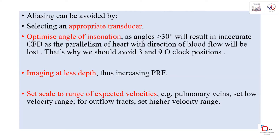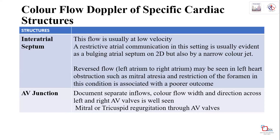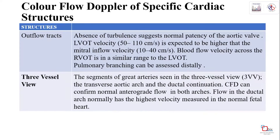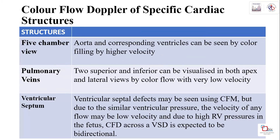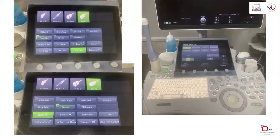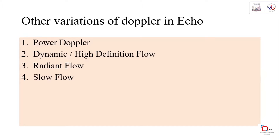Optimization of color flow Doppler includes appropriate transducer angle - the color flow angle should not be more than 30 degrees. Imaging at less depth is important as it increases the PRF. Set the scale according to the expected velocity of the target vessel. These settings must be adjusted on the machine according to each organ and clinical scenario.